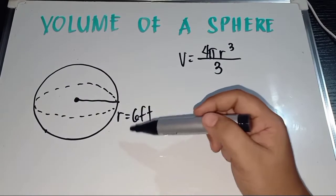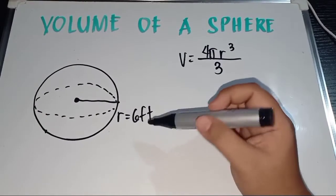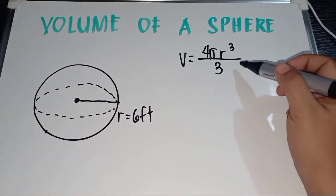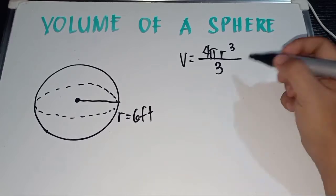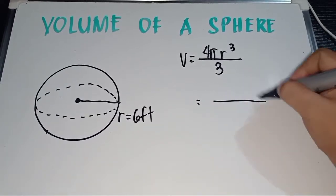We have here a sphere which has a radius of 6 feet. So, let us now substitute the value or the symbols here in our formula.